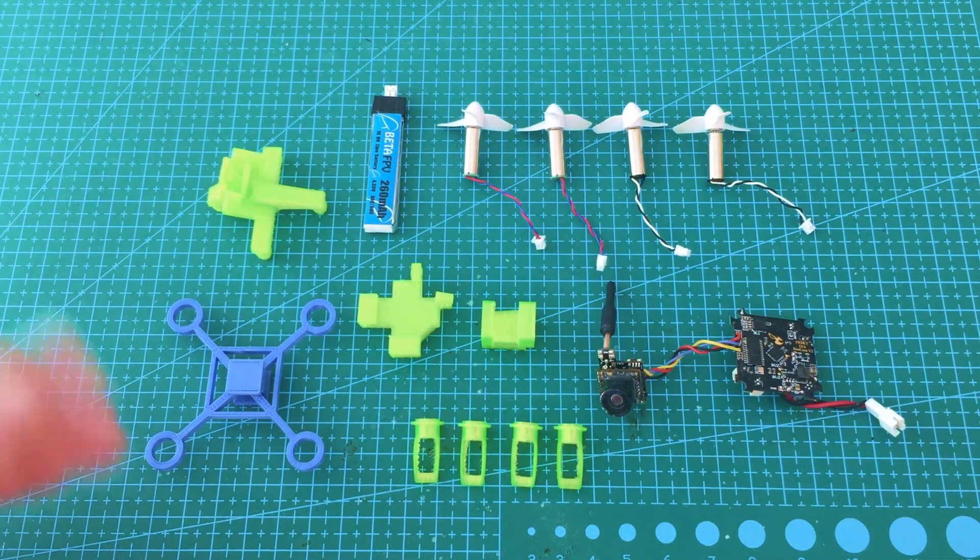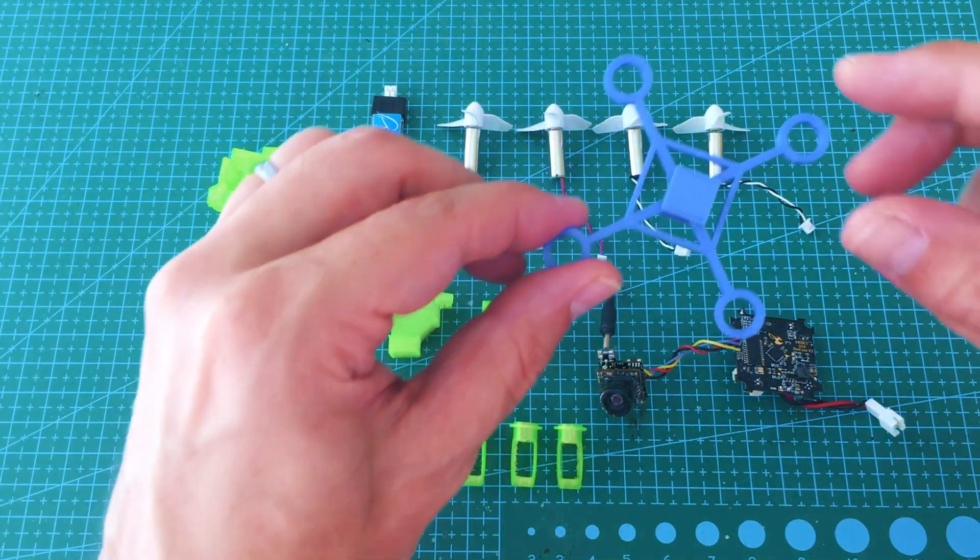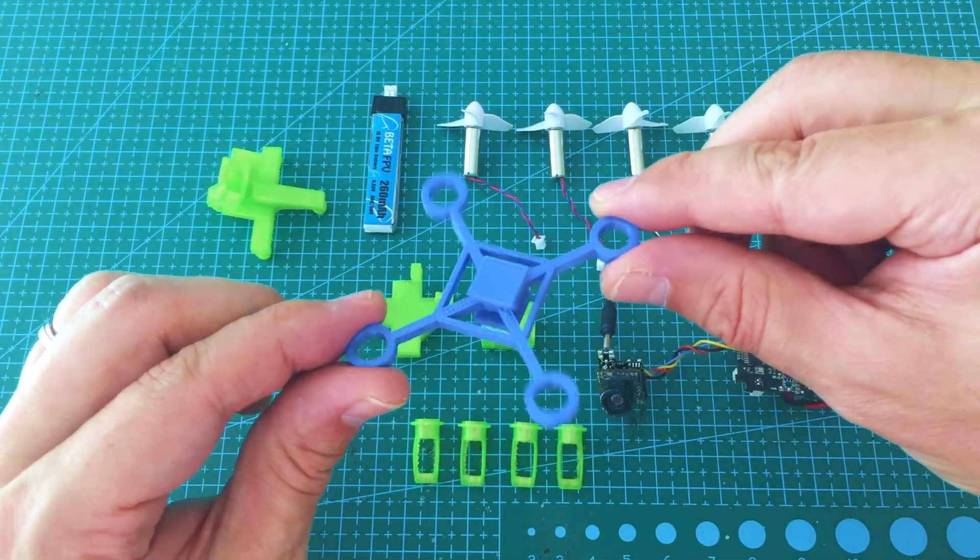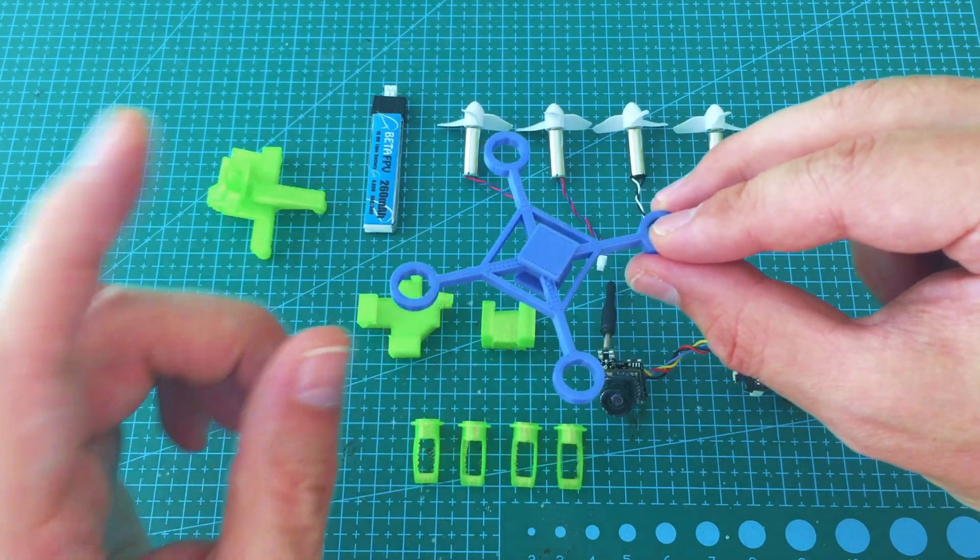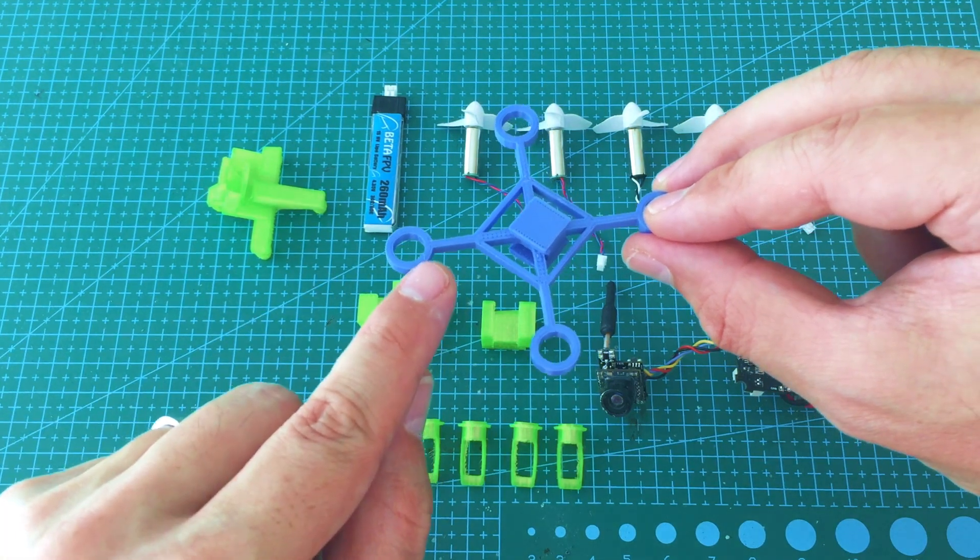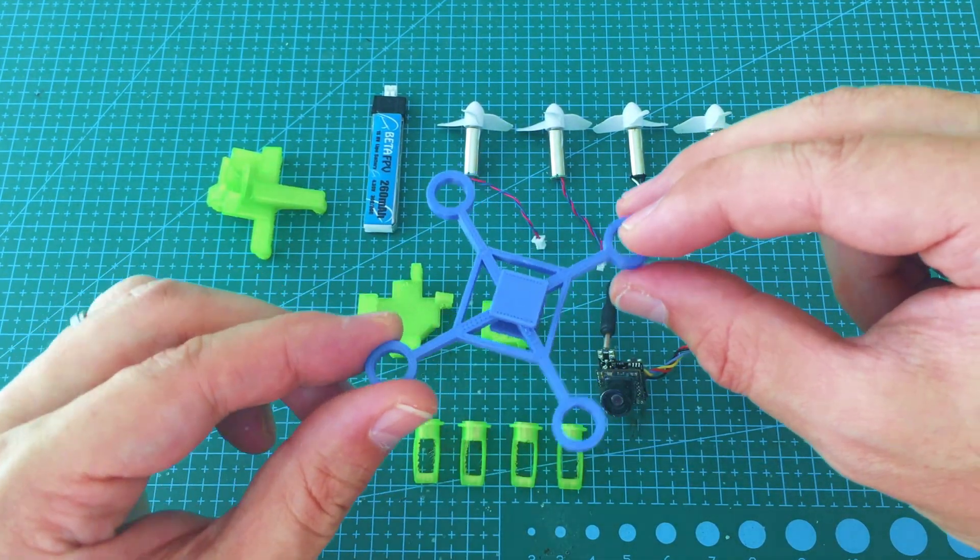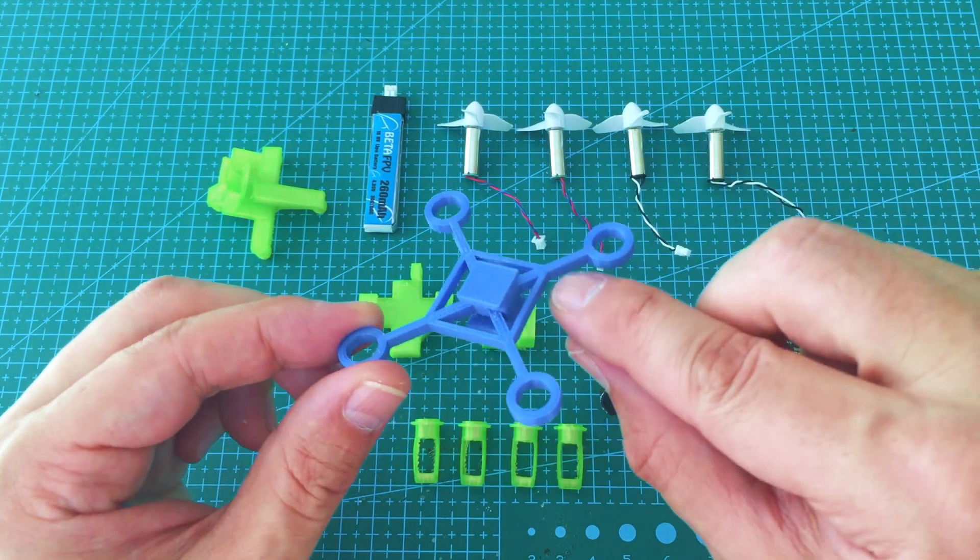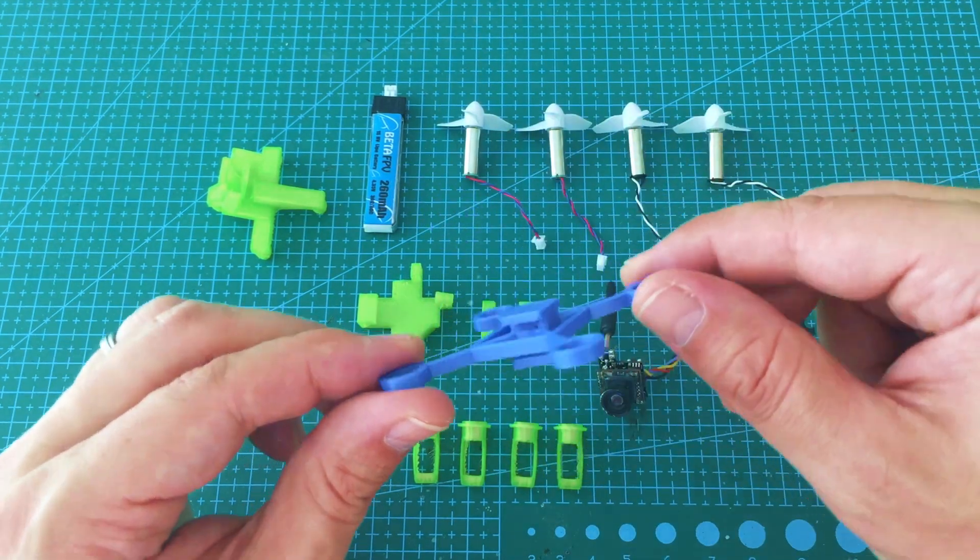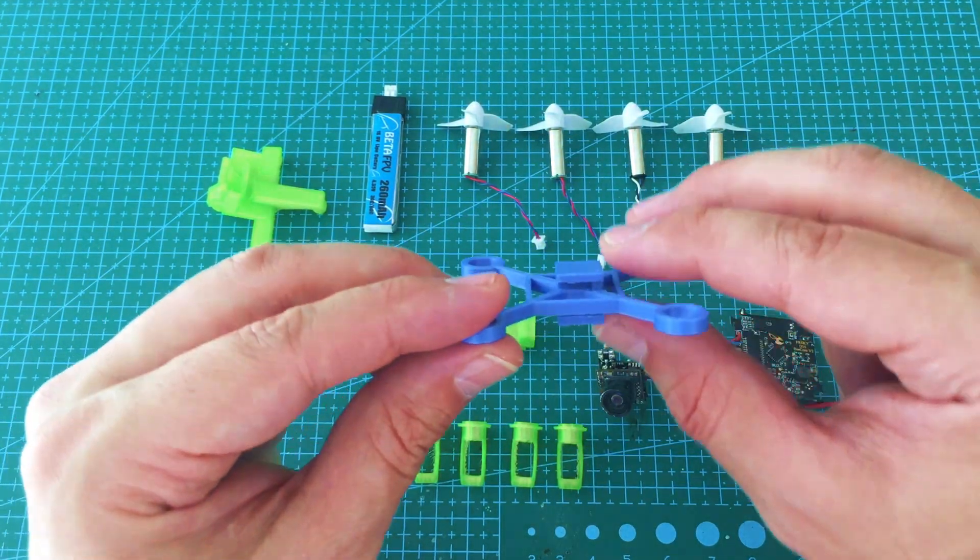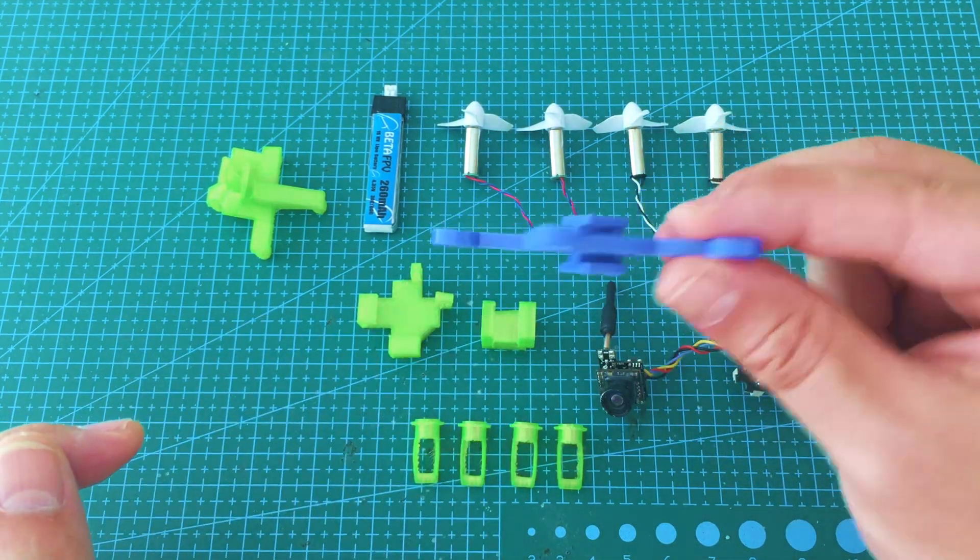So I'm gonna show you real quick each piece. Let's start with the frame. This is actually a slightly older design that I made. The final one has some reinforcement here and here because I think this is gonna be a little bit weak in a crash. But just to illustrate how this works, you can see here there are these ridges, this insertion piece.